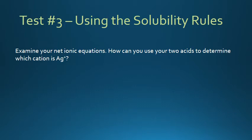Examine your net ionic equations again. You know that in those two containers you have either silver ions or copper ions. How can you use your two acids to determine which cation is silver?